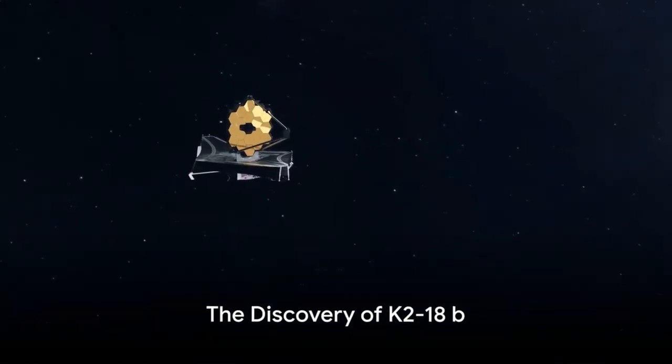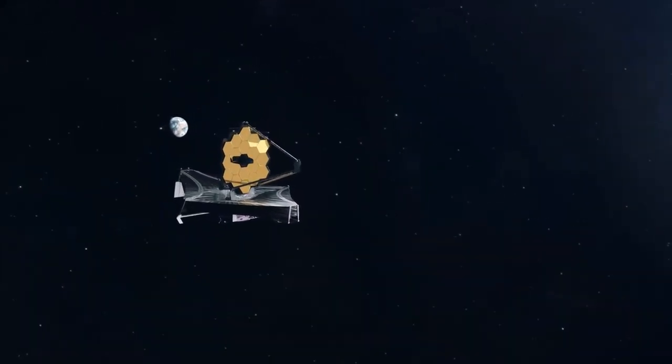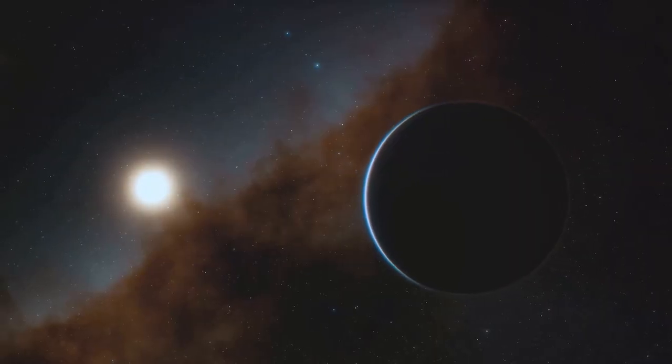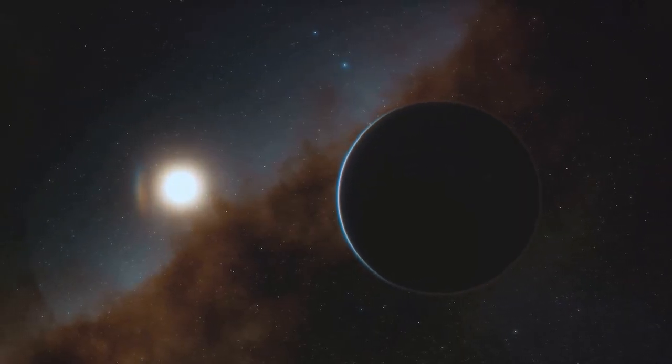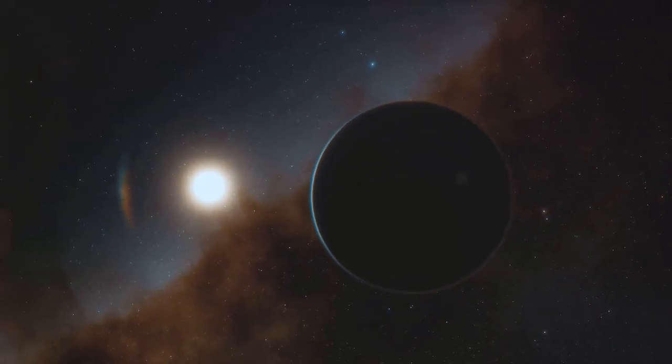Consider a planet twice the size of Earth that is staggeringly distant, 120 light-years away. When they found the exoplanet K2-18b, scientists at the James Webb Space Telescope did exactly that.